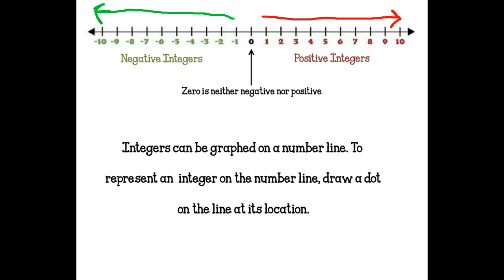Integers can be graphed on a number line. To represent an integer on the number line, you draw a dot on the line at its location.